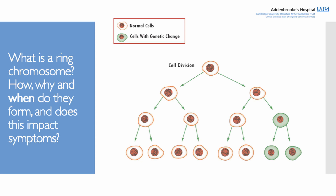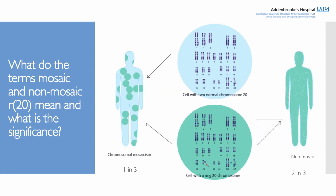That leads to the question of mosaic versus non-mosaic ring 20. If ring 20 forms a bit further down the line — not right at the beginning — that can lead to what we call mosaic ring 20, meaning it's not present in all of the cells of the body, just some of them. Non-mosaic means it is present in all cells. With ring 20, it's more common to be non-mosaic — about two out of three cases — while mosaic ring 20 occurs in about one in three people.